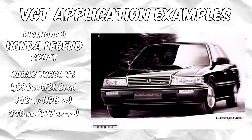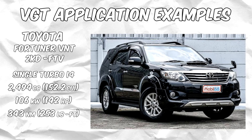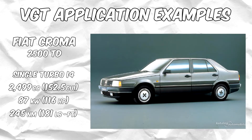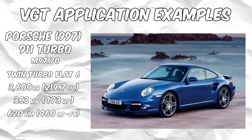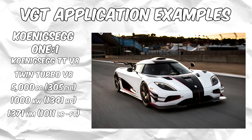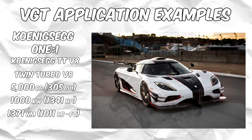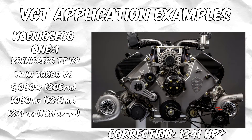One of the first examples of cars with VGTs is the 1988 Honda Legend with a water-cooled variable geometry turbo on its 2.0L C20A V6 engine. Other examples are the diesel-powered Toyota Fortuner VNT and Fiat Chroma. Additional examples you might not expect are the 2007 Porsche 911 Turbo with twin VGT turbos on its 3.6L V6 engine, and the Koenigsegg One:1, also featuring two variable geometry turbos on its 5L V8 engine, allowing it to produce 1,361hp.